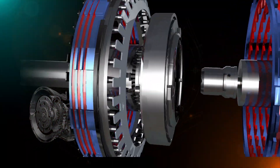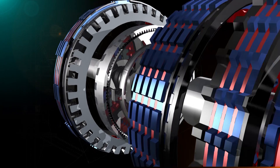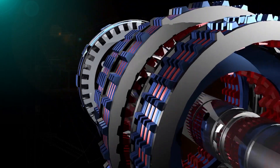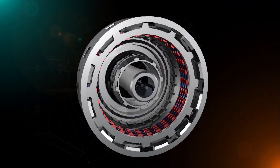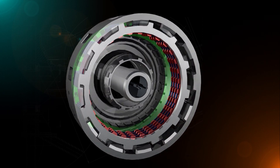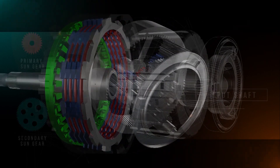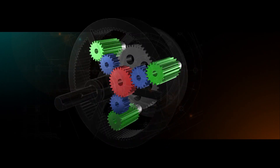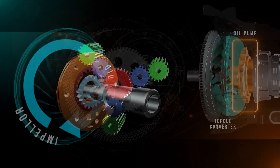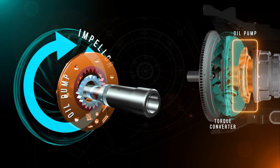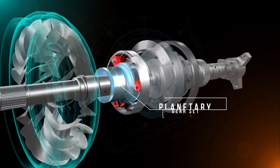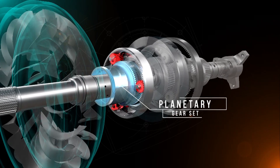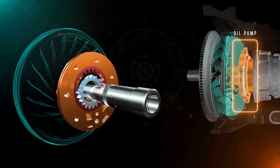The automatic transmission has become more popular and more complex, and that means every technician needs to have a solid foundation of knowledge about how these systems work. In this video, you'll learn about the key components that make up an automatic transmission, including bands, clutches, planetary gears, and torque converters. We'll explore power flow through the transmission,